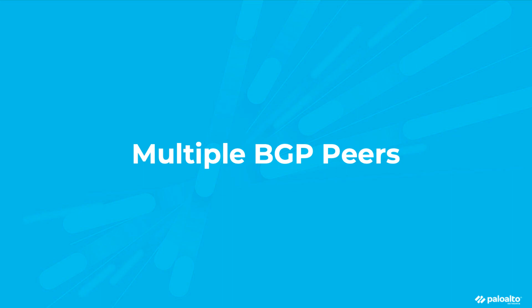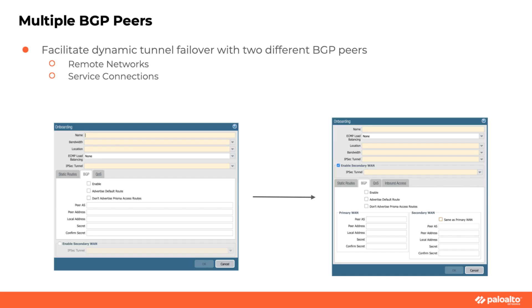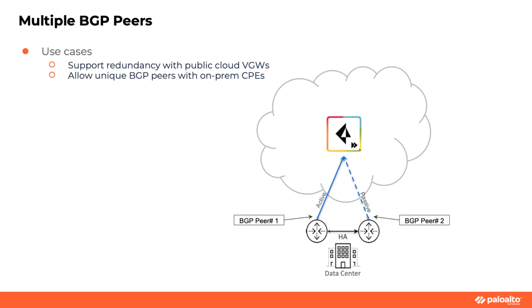Multiple BGP peers. This has been added to facilitate dynamic failover between two different BGP peers. Remote networks and service connections are supported. Today, Prisma Access cannot facilitate dynamic tunnel failover if the on-prem devices do not use the same IP address for BGP peering. This feature allows peering with up to two on-prem BGP peers so that dynamic failover can take place. In Panorama, you now have primary WAN and secondary WAN options. This is available for both remote networks and service connections.